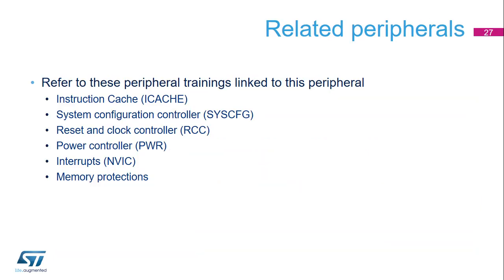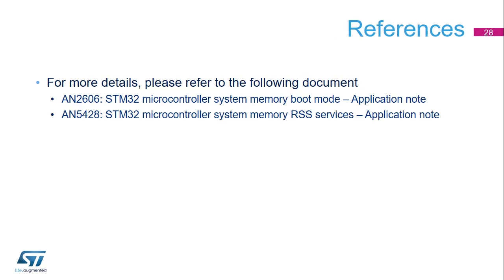The flash memory module has relationships with the following other modules: instruction cache (iCache), System Configuration Controller (SysCFG), Reset and Clock Controller (RCC), Power Controller (PWR), Interrupts (NVIC), and Memory Protections. For more details, please refer to application note AN2606 about the STM32 microcontroller system memory boot mode and AN5428 about the STM32 microcontroller system memory RSS services.